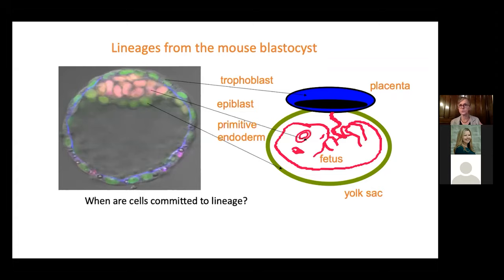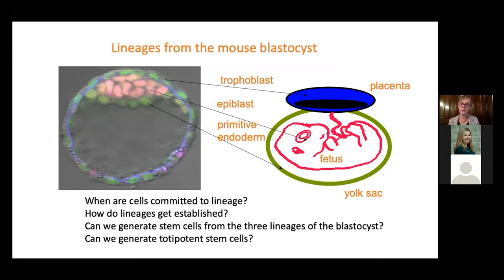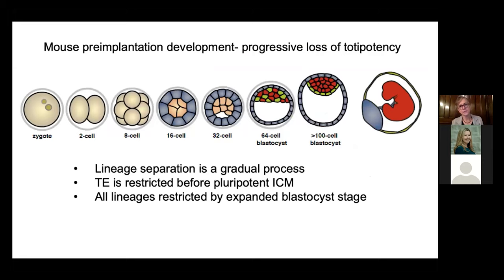Over my career, there are several questions we've tried to address with different tools at different stages of technological development. First: when do cells get committed to these lineages? Can they change fate? When does fate get established? What are the signaling pathways and genetic controls leading to separation of these three cell fates? Can we generate stem cells equivalent to the three lineages? And most recently: could we generate totipotent stem cells rather than lineage-specific ones?